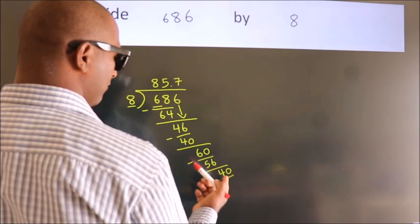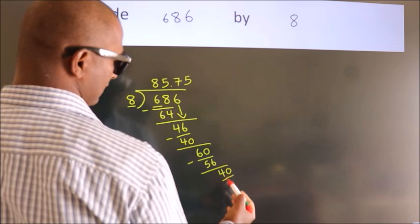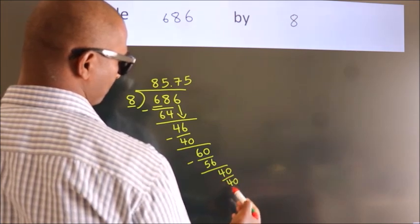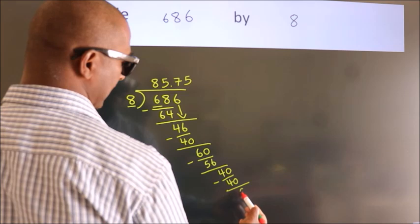When do we get 40 in the 8 table? 8 times 5 is 40. Now we subtract. We get 0.